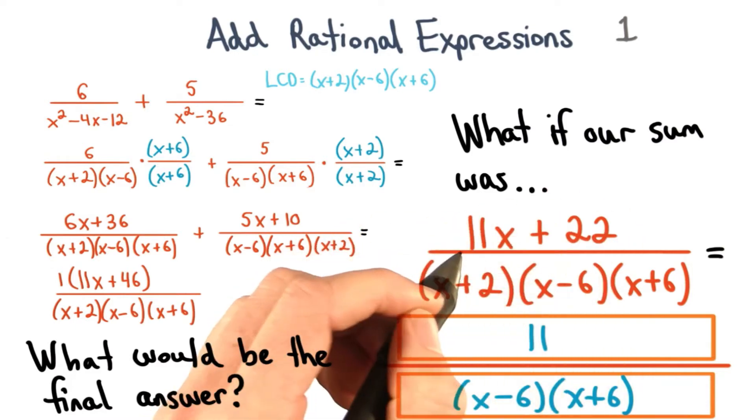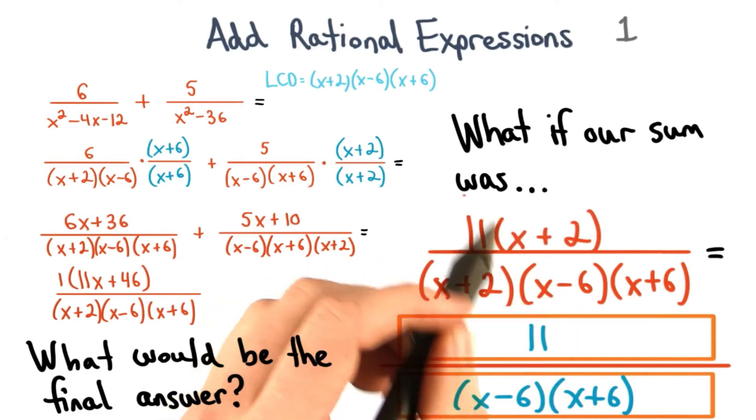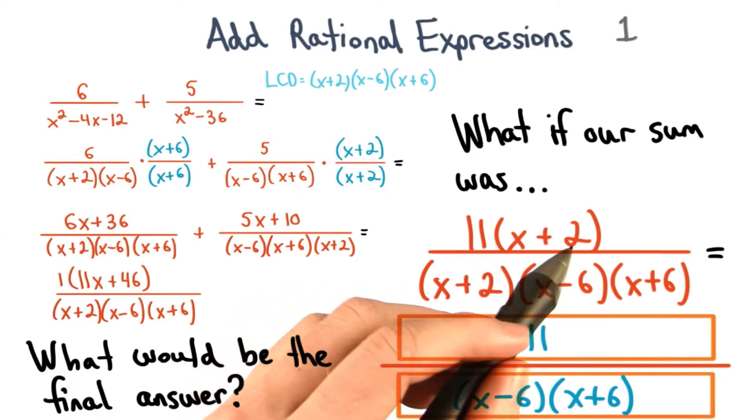When I look at this numerator and these two terms, I can see they share a common factor of 11. If we factor 11 out of our numerator, we'll get 11 times x plus 2.